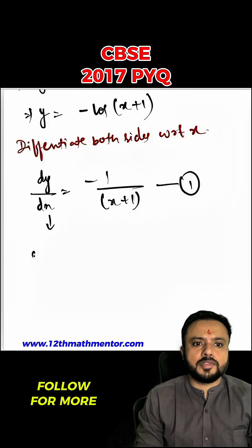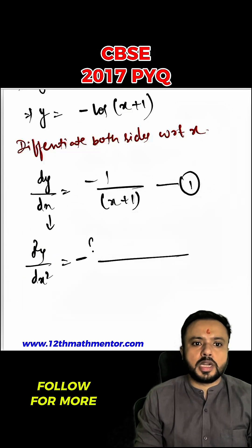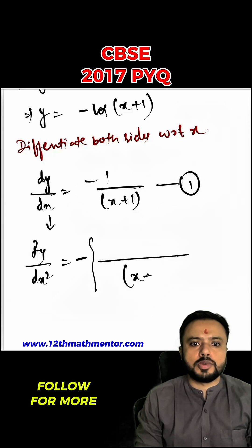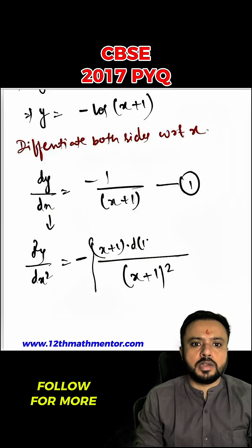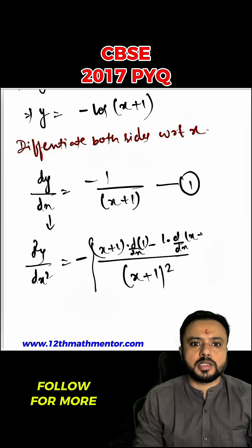I will again differentiate this function with respect to x. So d²y upon dx² equals — taking the negative sign outside and applying the quotient rule — the denominator is (x plus 1) whole square, and the numerator is (x plus 1) into the differentiation of 1 with respect to x, minus 1 into the differentiation of (x plus 1).